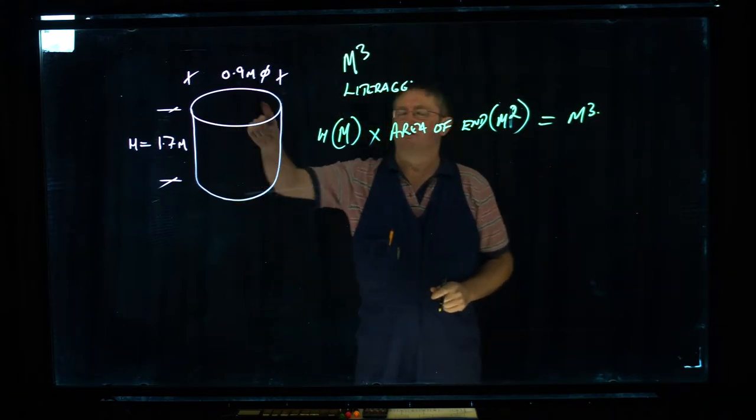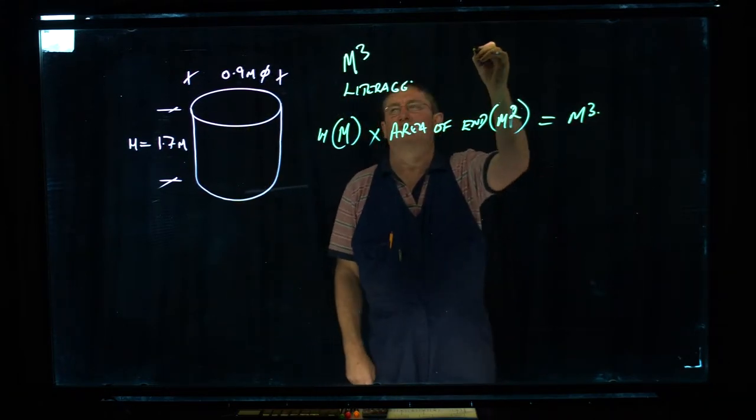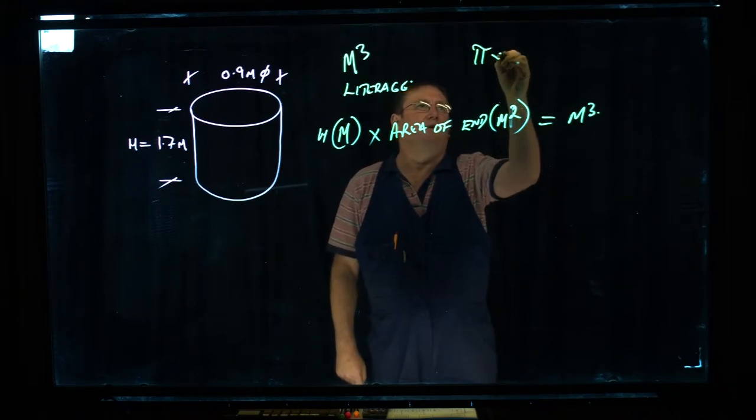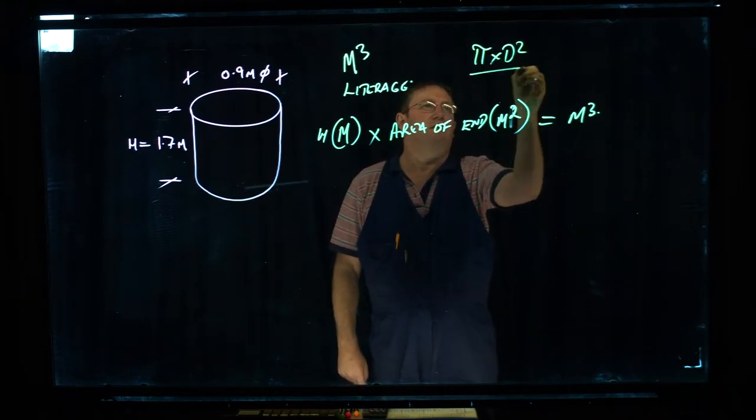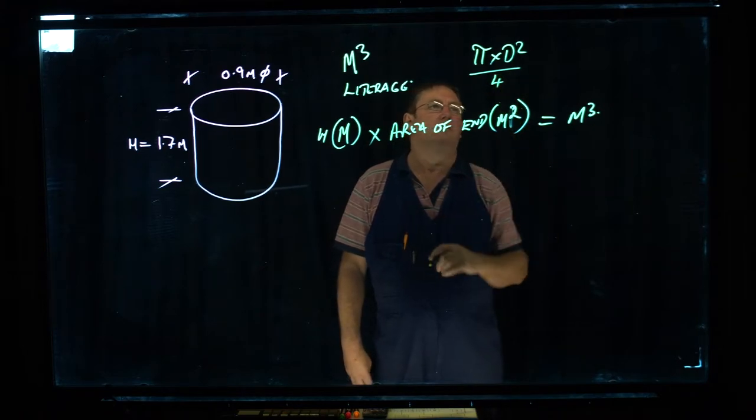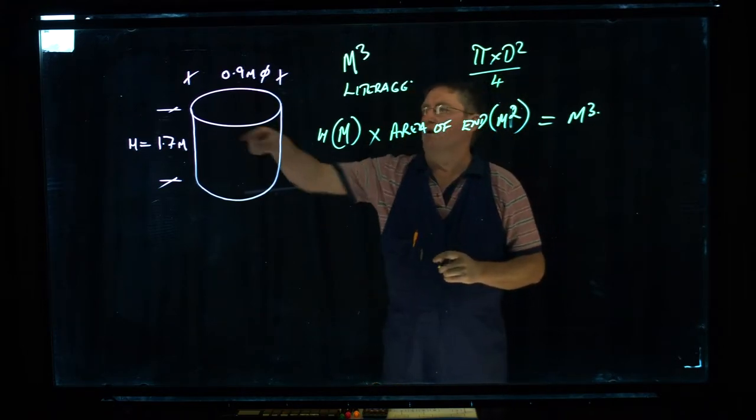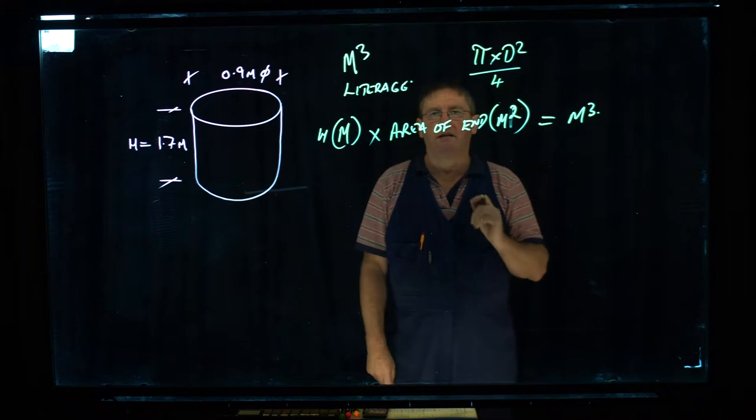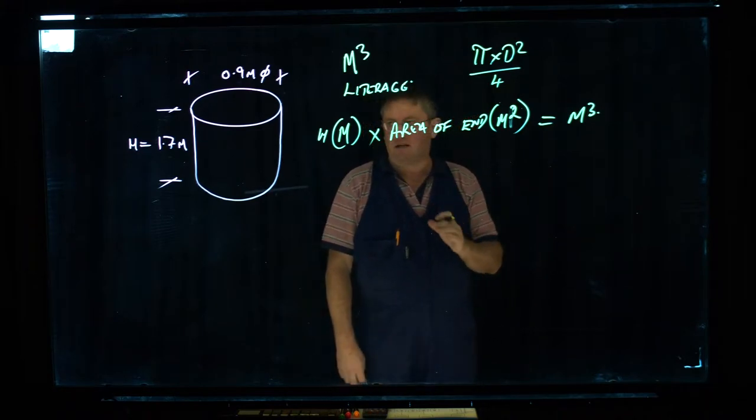So we've got a circle here. The formula for a circle, in this case I'm going to use pi times d squared over 4. That's going to give us the area of the end and what we need to do is always enter our figure in metres.